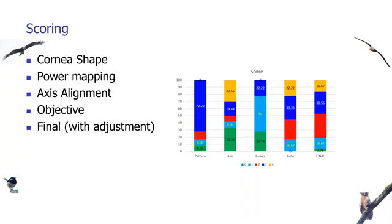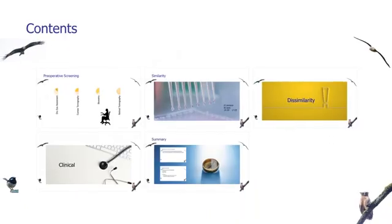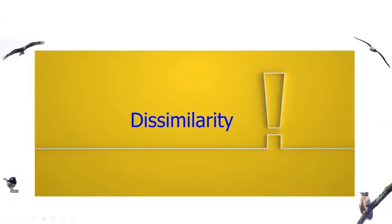From all this we generate a score, automatically determined, and the final with a little bit of manual adjustment. Scores of three or four are more than 50%, and scores of two, three, or four are close to 70-80%. Most maps between Sirius and IOLMaster are quite similar, showing that IOLMaster maps are quite reliable up to 4 mm. There are dissimilar cases as well.